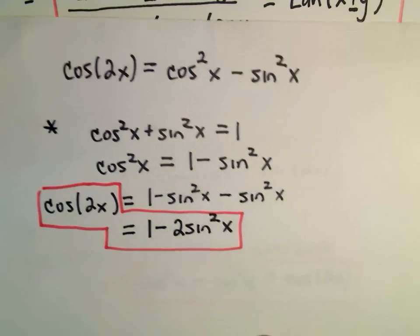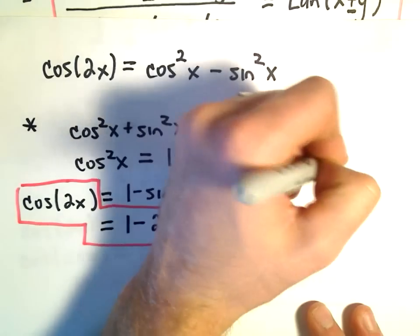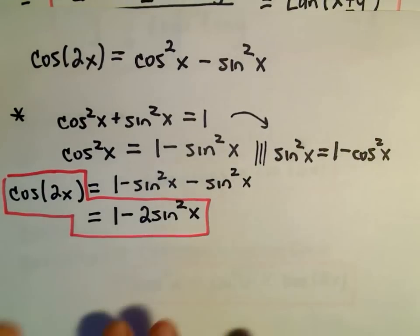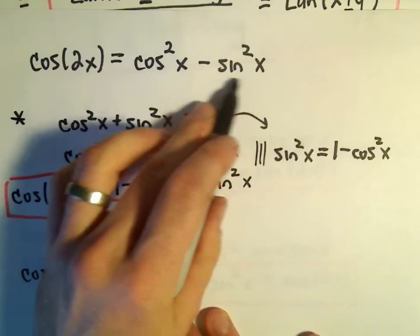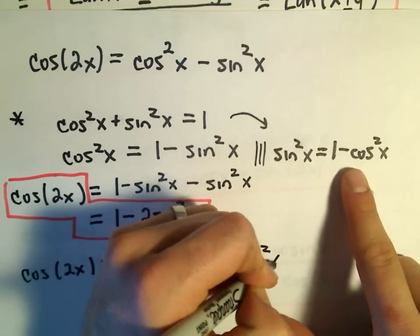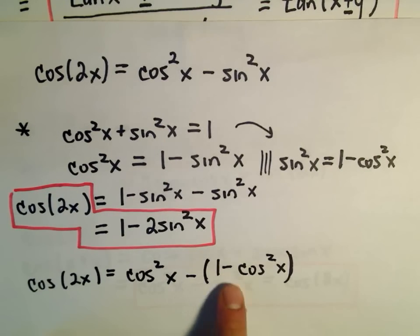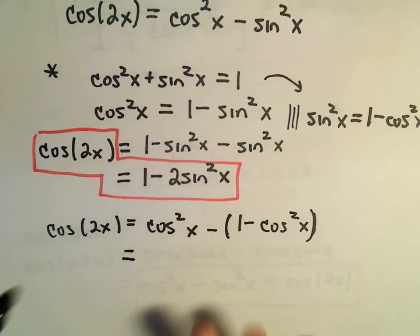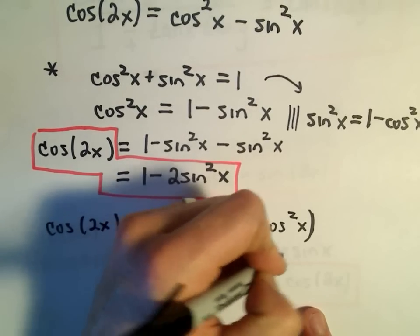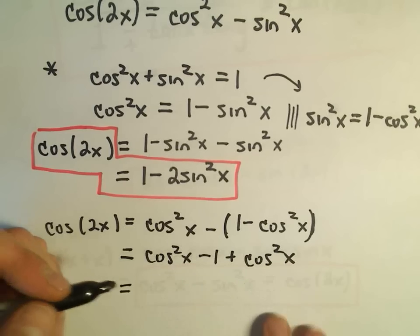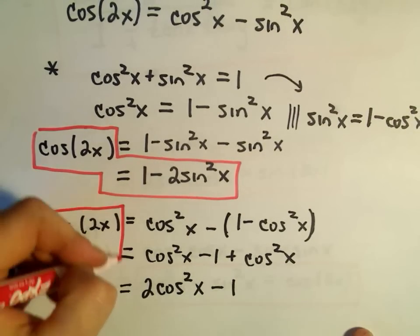We can do the exact same thing — instead of solving for cosine squared we could solve for sine squared: sine squared x equals 1 minus cosine squared x. Now using our identity cosine of 2x equals cosine squared x minus sine squared x, we replace sine squared with one minus cosine squared x. Be careful to distribute the negative sign: we get cosine squared x minus 1 plus cosine squared x. Now we've got cosine squared and cosine squared, giving us 2 cosine squared x minus 1 — yet another identity for cosine of 2x.